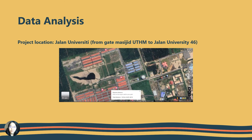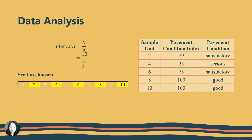I'm Doris, metric number AF210093, and I'm responsible for the data analysis. Our project location is at Jalan University, UTHM, from the Bangunan Masjid UTHM to Jalan University. Since the interval is 2, we chose sections 2, 4, 6, 8, and 10 as our sample units. The performance condition index and pavement condition for each sample unit are shown below.